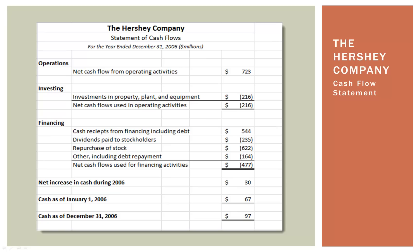When the year started, Hershey had $67 million on hand — think of it as what was in their wallet on January 1st. It's a big wallet. Through the activities of the whole year, they added $30 million on top of that. So as of the end of 2006, they had $97 million of cash assets.